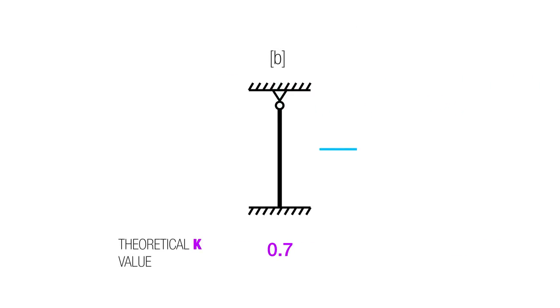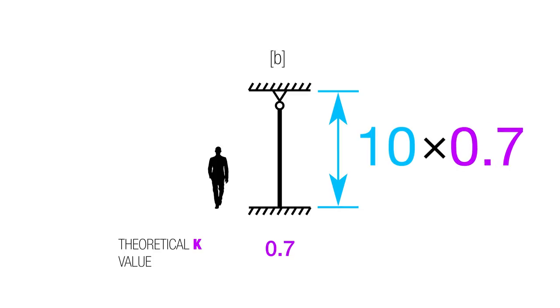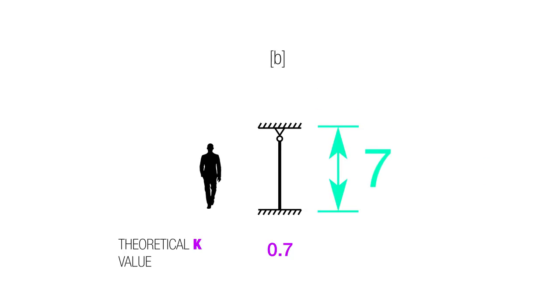If we look at this one here, if we have a column that's fixed on the bottom and it has a pin connection on the top and it's 10 feet long. In terms of its likelihood of buckling, we're gonna multiply it by 0.7. So a 10 foot column will look more like a 7 foot column when we size it for buckling.